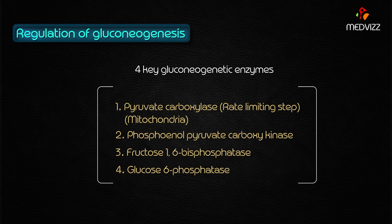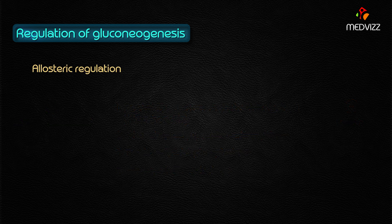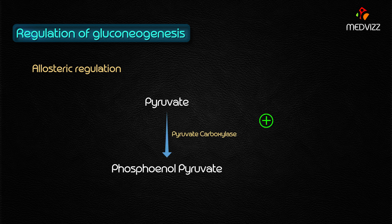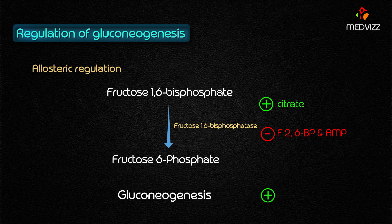Regarding regulation of gluconeogenesis: the four key enzymes are the regulatory enzymes of this pathway. Glucagon and cortisol (glucocorticoids) increase the rate of gluconeogenesis by inducing them, while insulin decreases the rate by suppressing them. For allosteric regulation: pyruvate carboxylase is activated by acetyl-CoA and inhibited by ADP, and fructose 1,6-bisphosphatase is activated by citrate and inhibited by fructose 2,6-bisphosphate and AMP. Gluconeogenesis is enhanced by ATP.